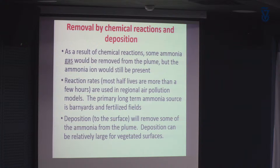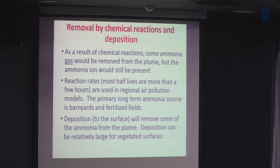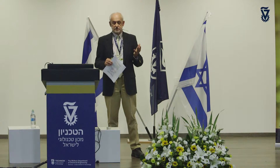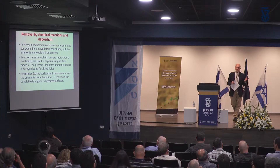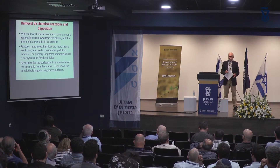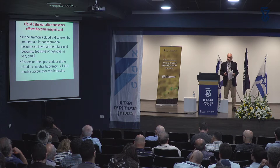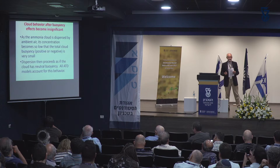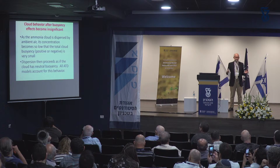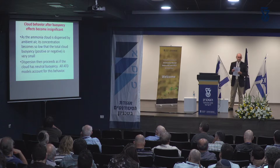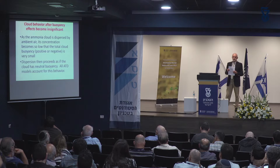Removal is a subject Tom Spicer covered, and as he pointed out, you can remove a lot of material from the plume if you have a reactive surface. Many chemists I talk to work with regional air quality models where emissions are from barnyards and fertilized fields, and they have half-lives for chemical reactions between ammonia and other air pollutants on the order of half-hours to a few hours. Eventually, at some point the plume stops being buoyant or dense, and it just approaches dispersion of an inert substance in the air — and even with huge sources, that happens within a few kilometers.